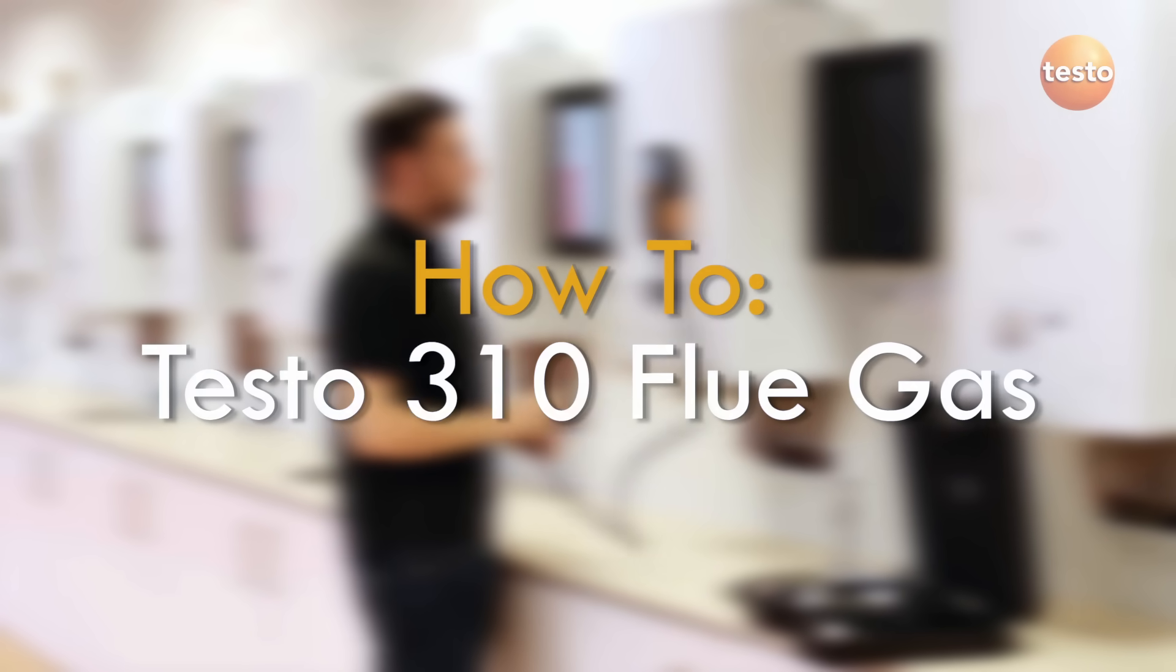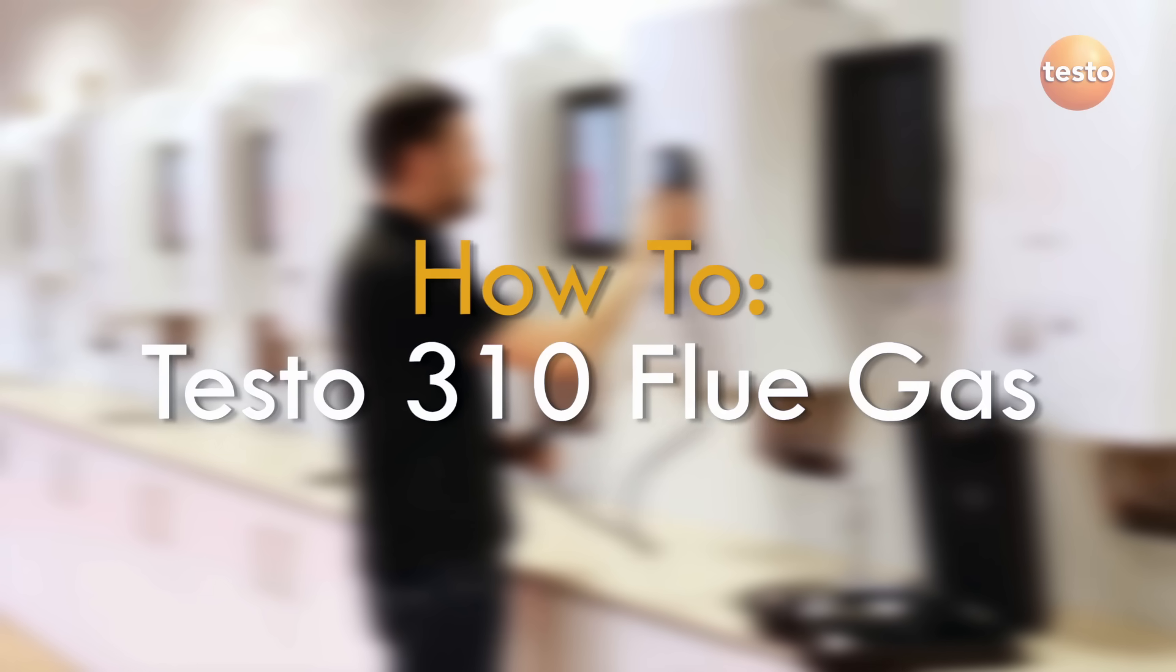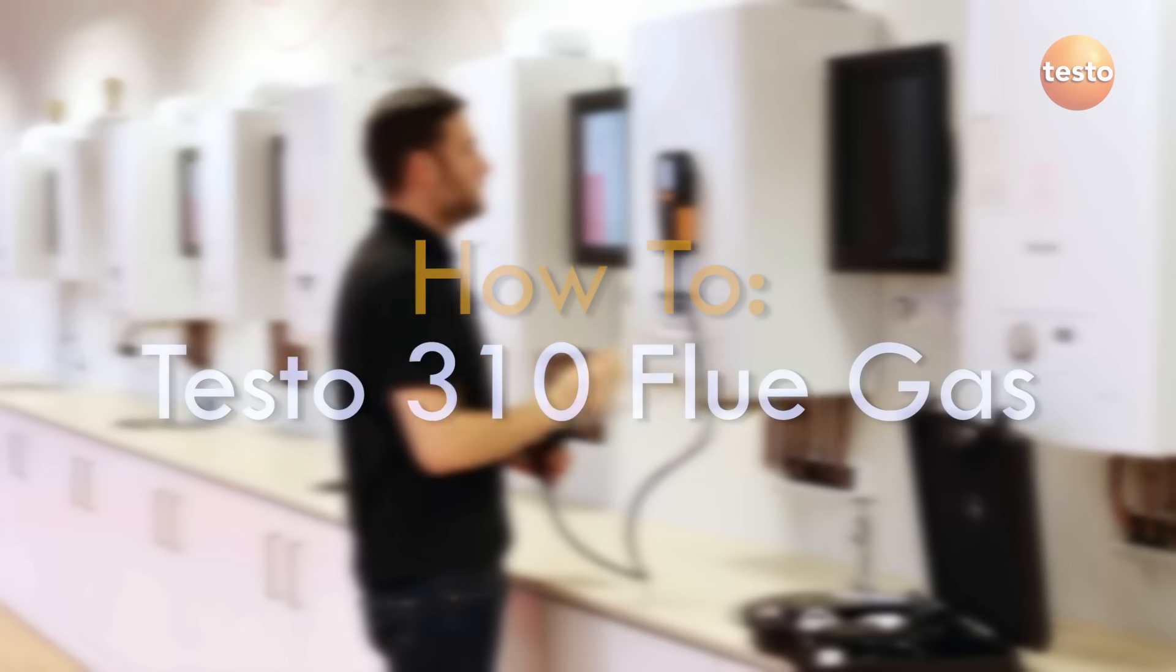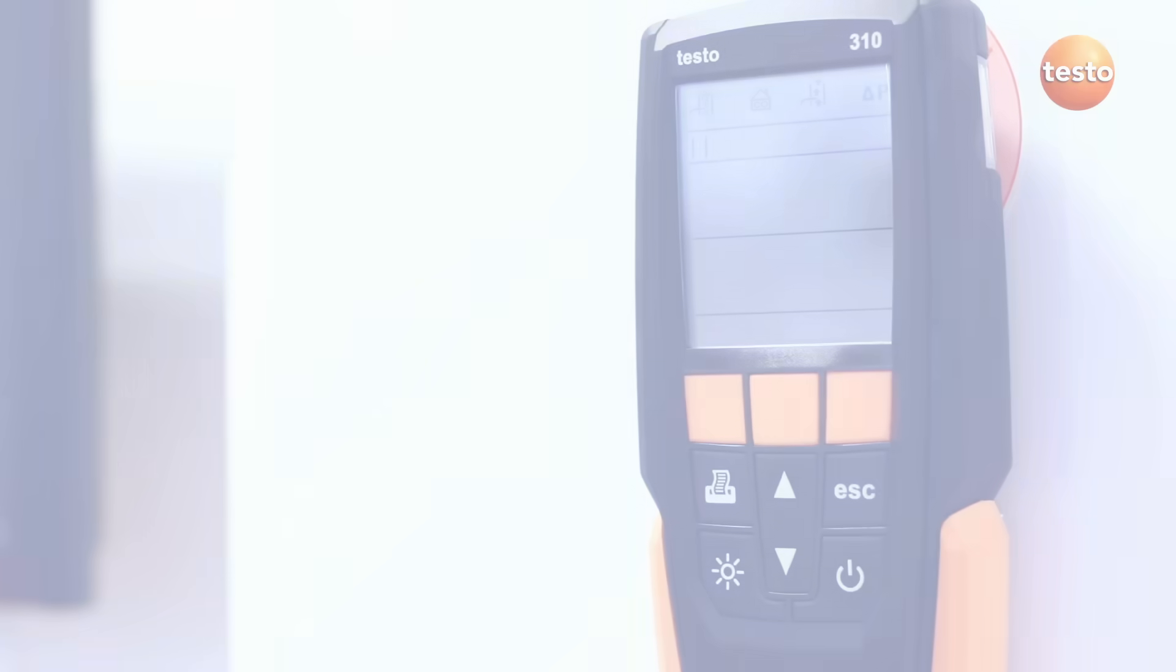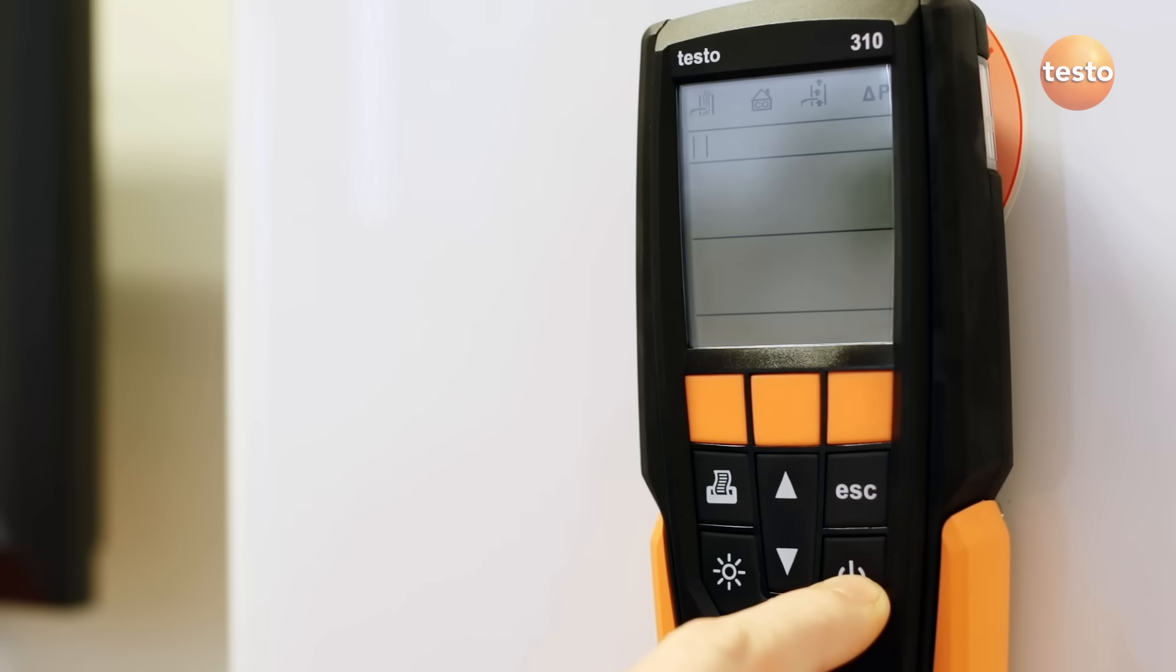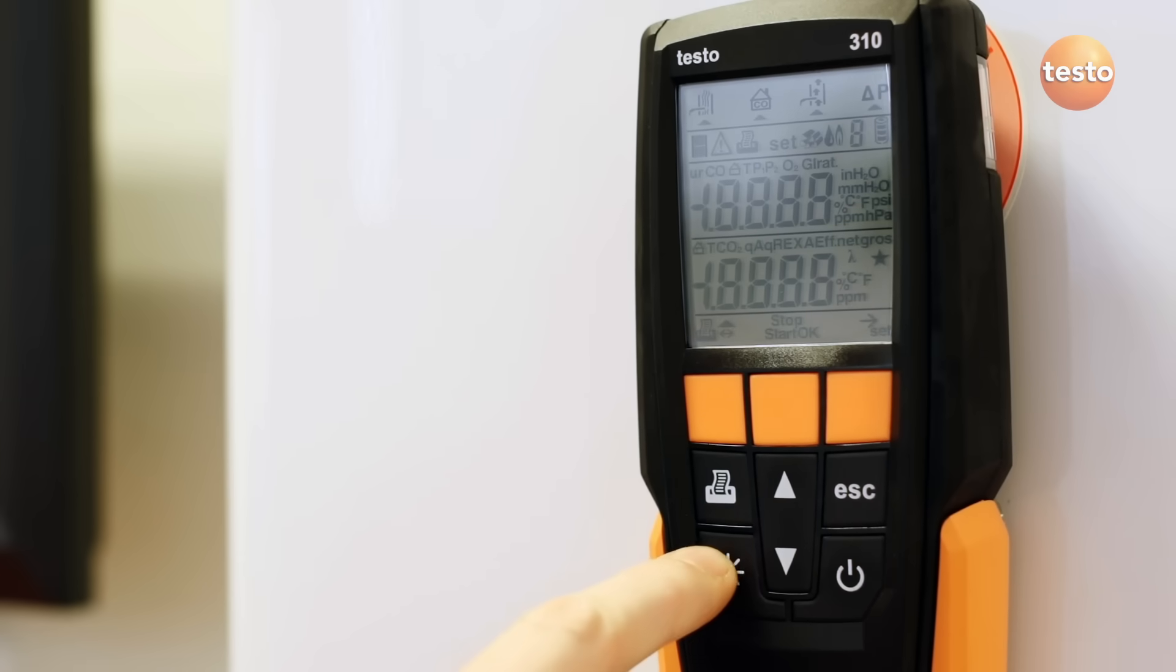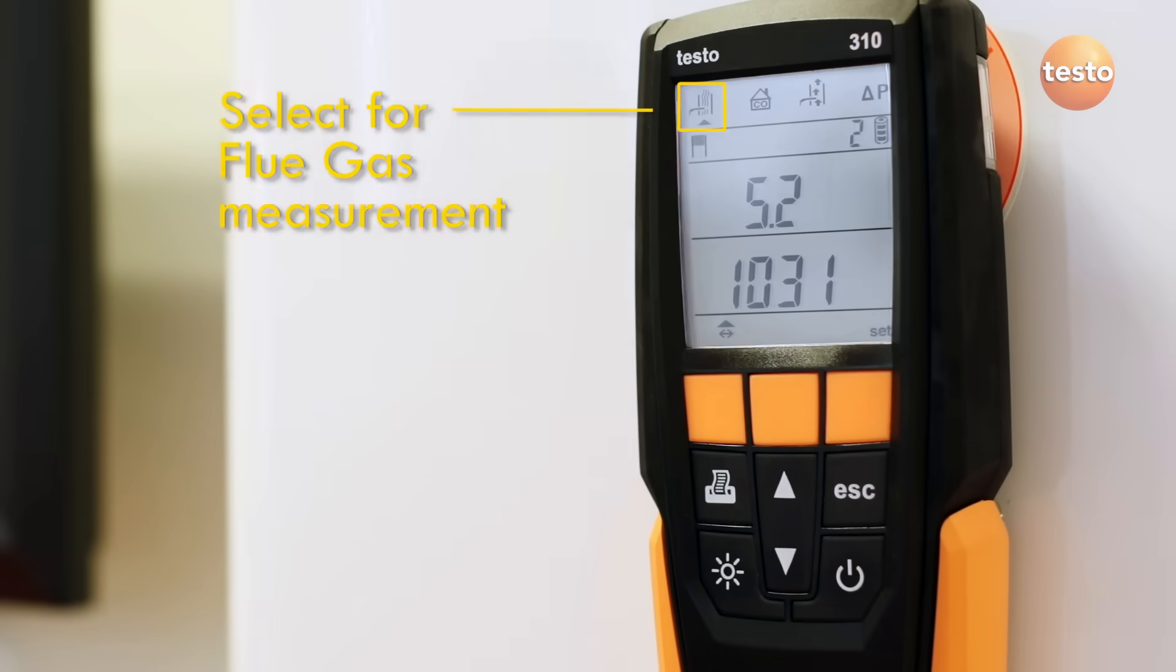The Testo 310 is a flue gas analyzer for use in commissioning and servicing domestic boilers. To carry out a flue gas measurement with the Testo 310, turn the instrument on and make sure the flue gas test icon is selected at the top of the screen.